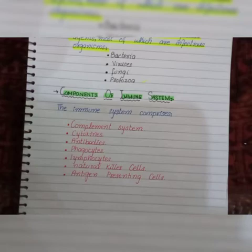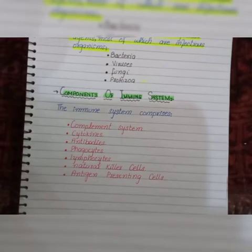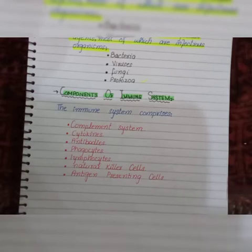Last, we have the antigen-presenting cells. We have many antigen-presenting cells, including macrophages that help in phagocytosis, and B cells that help in antibody production. So these are the components of the immune system that help to maintain the immunity of our body — essentially protection from diseases, especially infectious diseases.